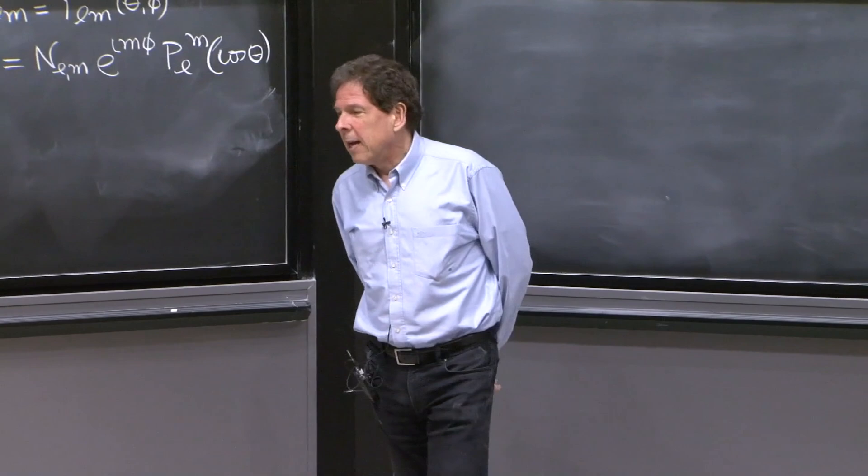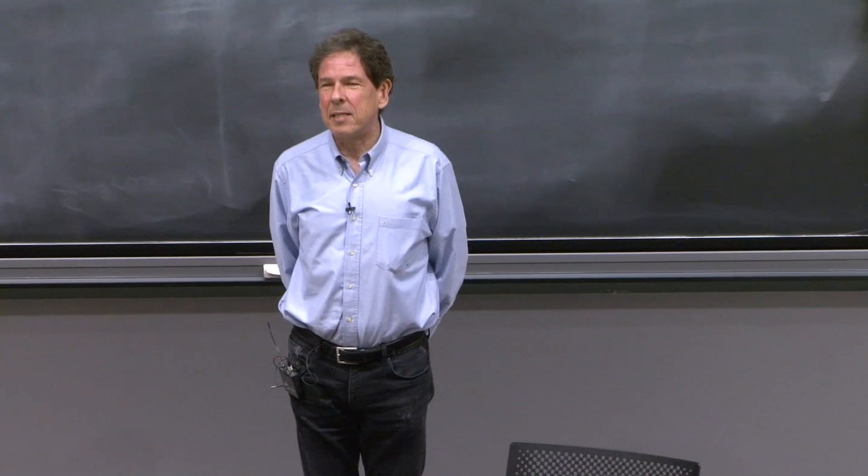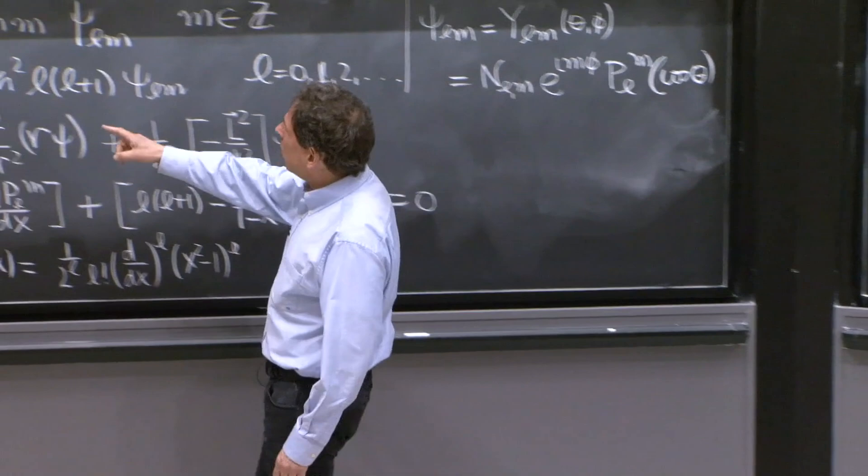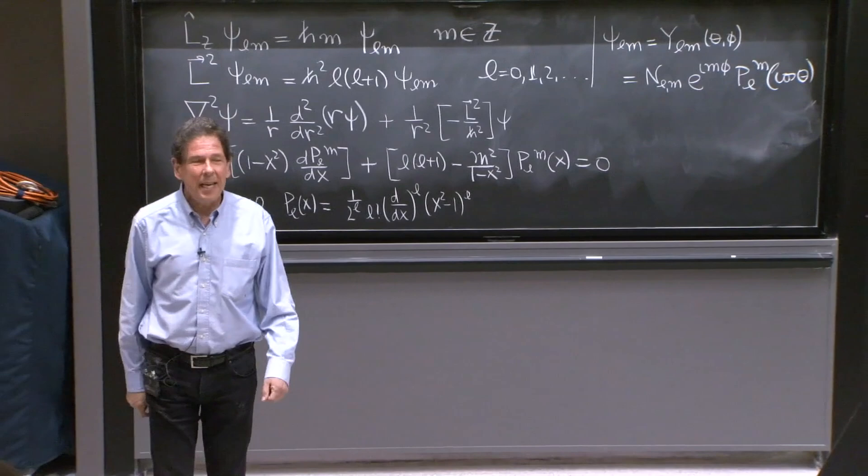Given that they commute, it's a general theorem, that two Hermitian operators that commute, you can find simultaneous eigenstates of those two operators. And therefore, we set up for the search of those wave functions that are simultaneous eigenstates of one of the three components of angular momentum. Everybody chooses Lz and L squared.